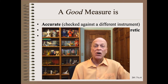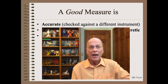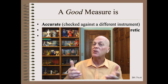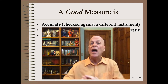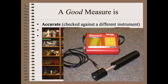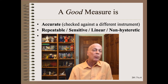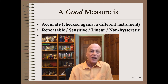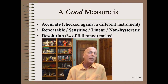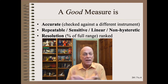A good measure is desirably accurate, meaning it can be checked against an independent and hopefully different type of measurement that is more trustworthy. It is possible to do great trial work with measurements for which accuracy has no meaning — roll hardness instruments in winders, for example, cannot be checked against an independent standard because there is none, yet they are still quite useful. A good measurement is also desirably repeatable, sensitive, linear, and non-hysteretic, all of which are easily quantifiable by checking the instrument as covered in this Web 201.71 series. Beyond these requirements, we want our measurement to have the best resolution we can afford.